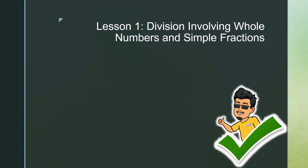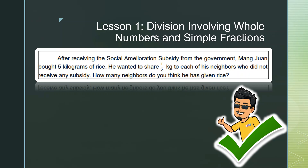Hello class, let's begin with Lesson 1: Division Involving Whole Numbers and Simple Fractions. Let's try to answer this problem. After receiving the social amelioration subsidy from the government, Mang Juan bought five kilograms of rice. He wanted to share one half kilogram to each of his neighbors who did not receive any subsidy.